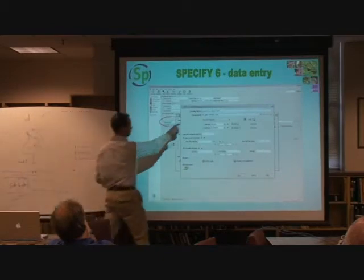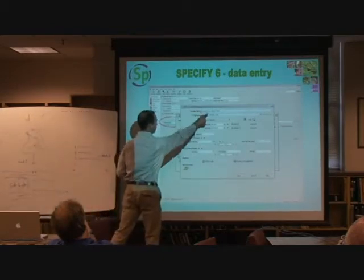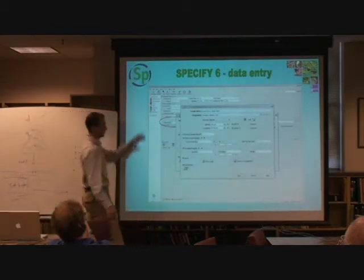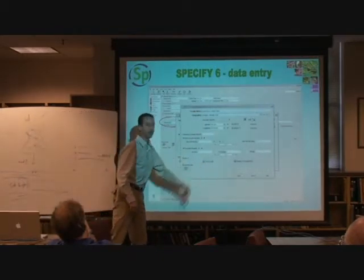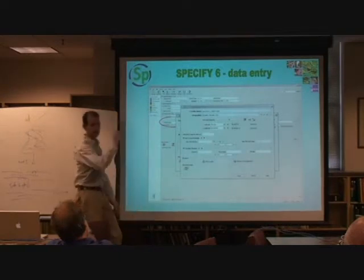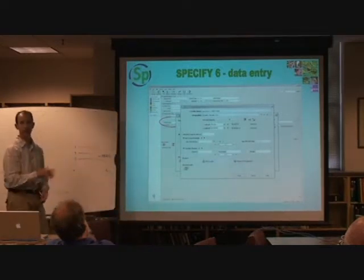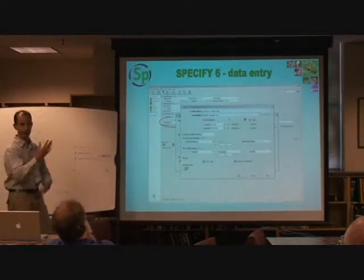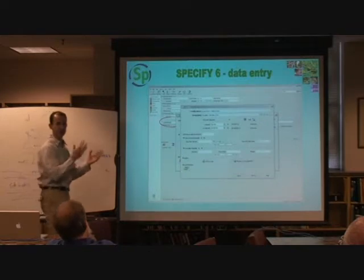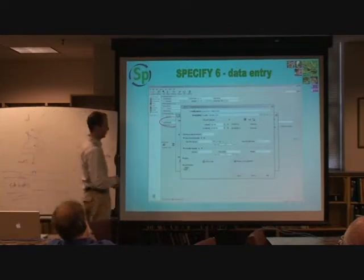Once you have a geography and a locality name inserted on this form, this button will become active, and you can click on it and it'll go out and georeference that particular record for you. You can accept it, skip it, or do whatever you want to do.